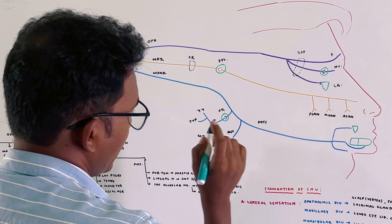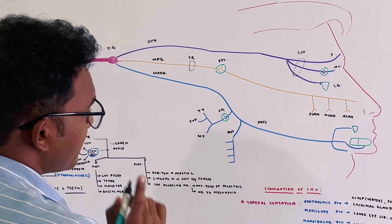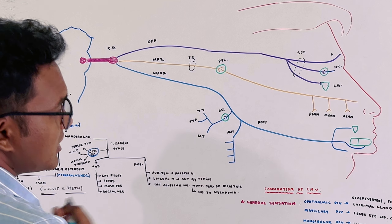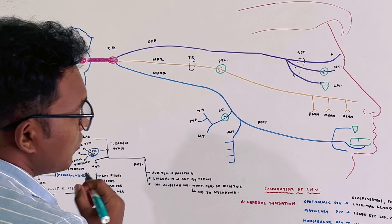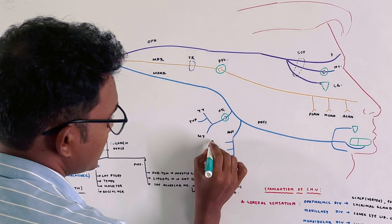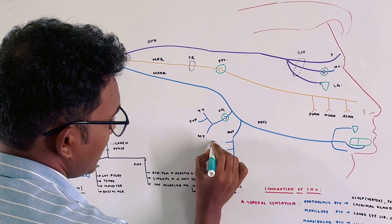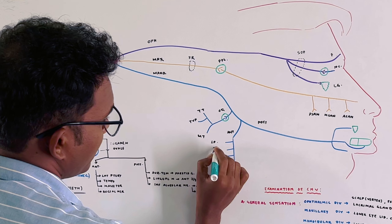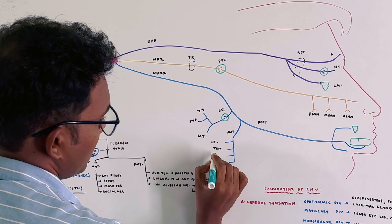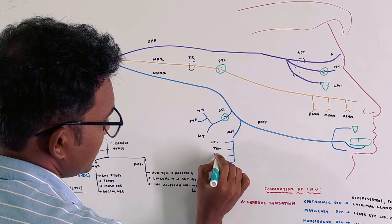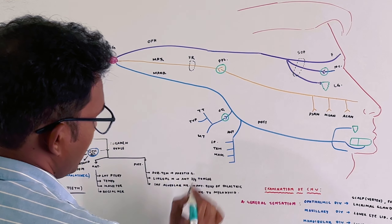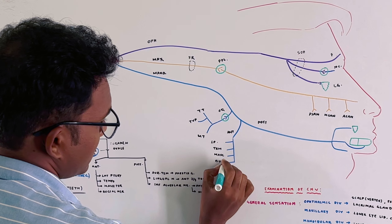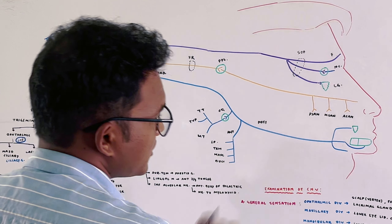The anterior division is mainly supplied to the muscles of mastication: the lateral pterygoid muscle, the temporalis muscle, the masseter muscle, and the buccal muscle.